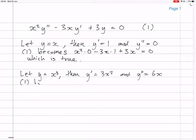And so then, the differential equation becomes x squared times 6x, minus 3x times 3x squared, plus 3 times x cubed. Okay. And now, that is the same as saying that 6x cubed minus 9x cubed plus 3x cubed equals 0. Which is true.